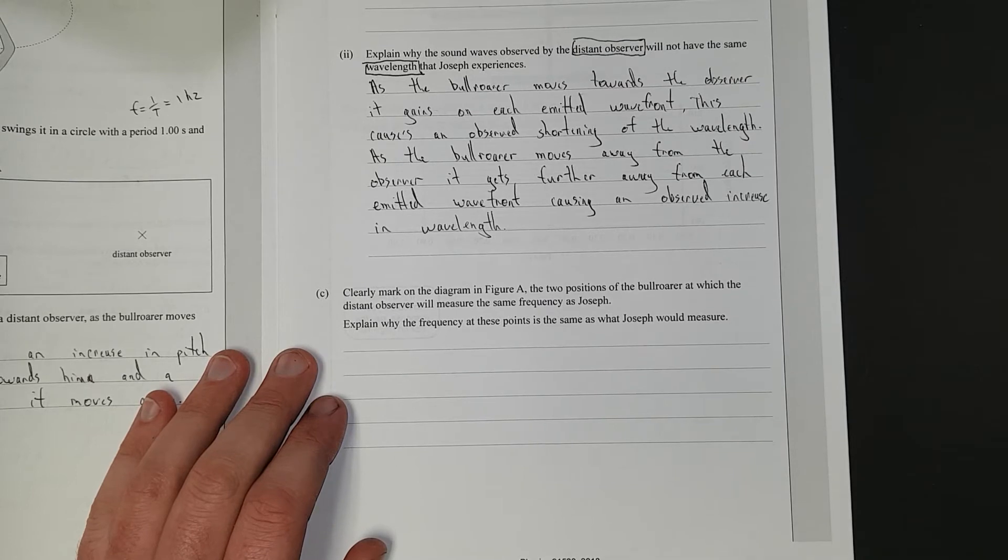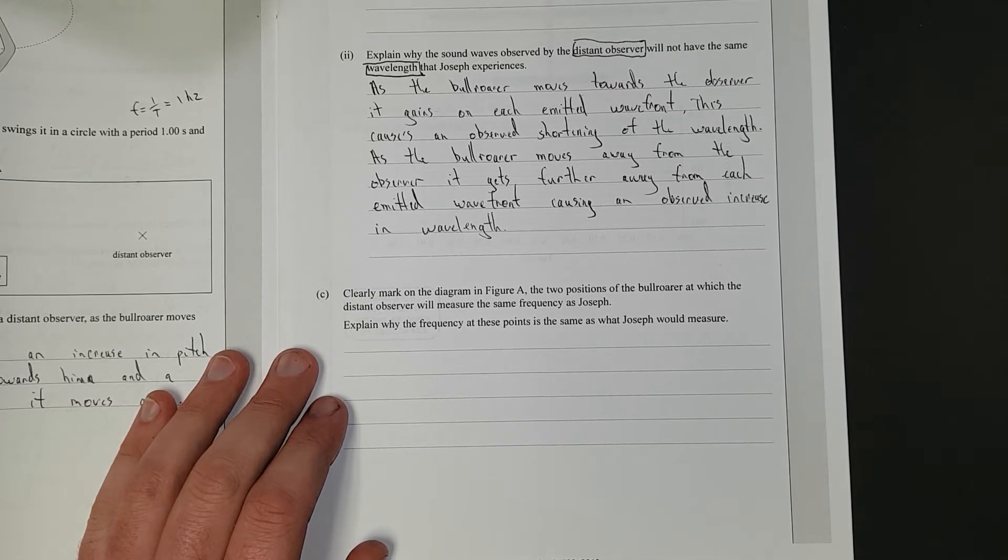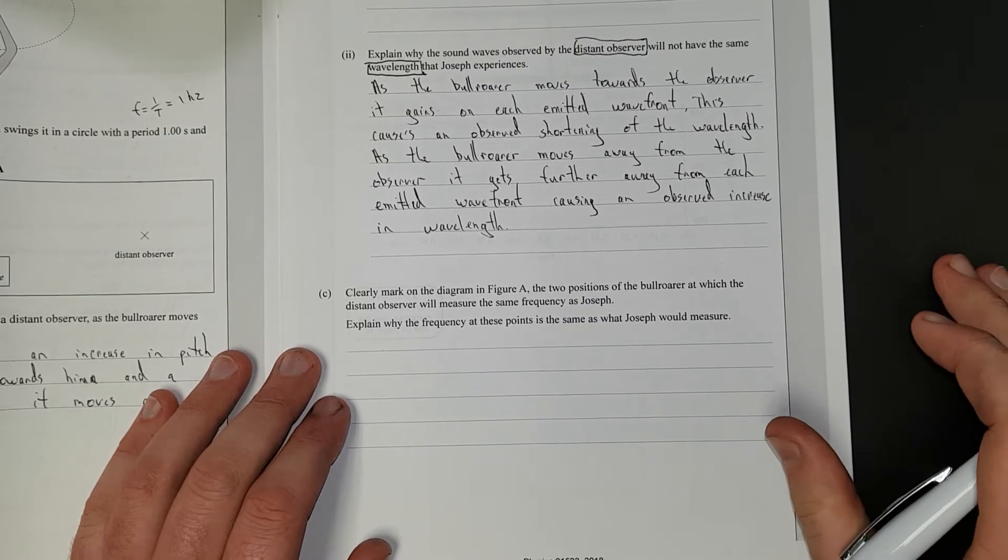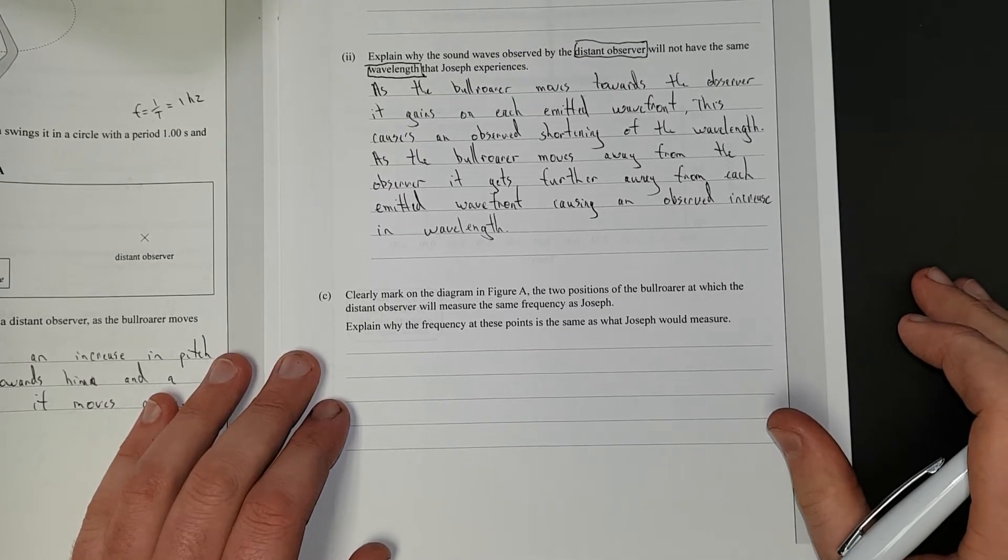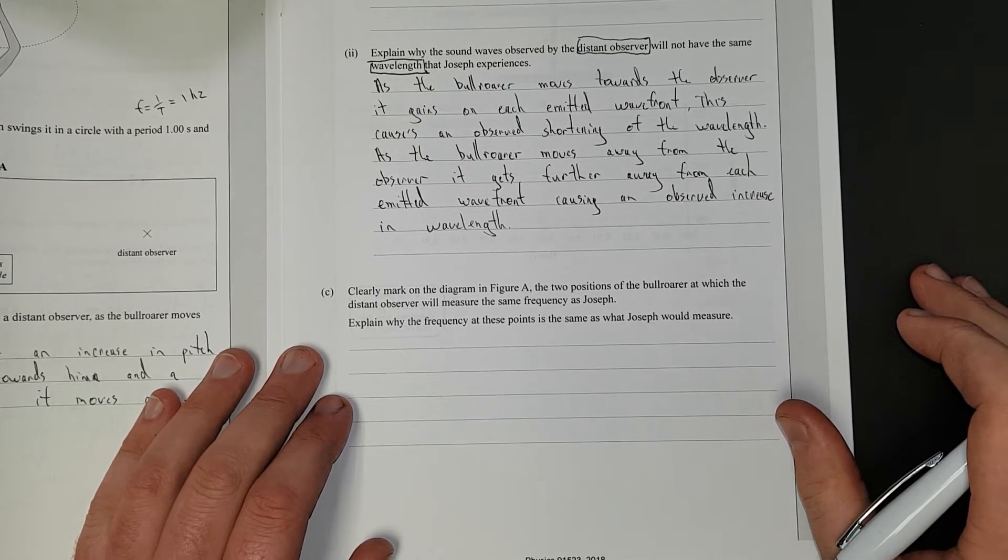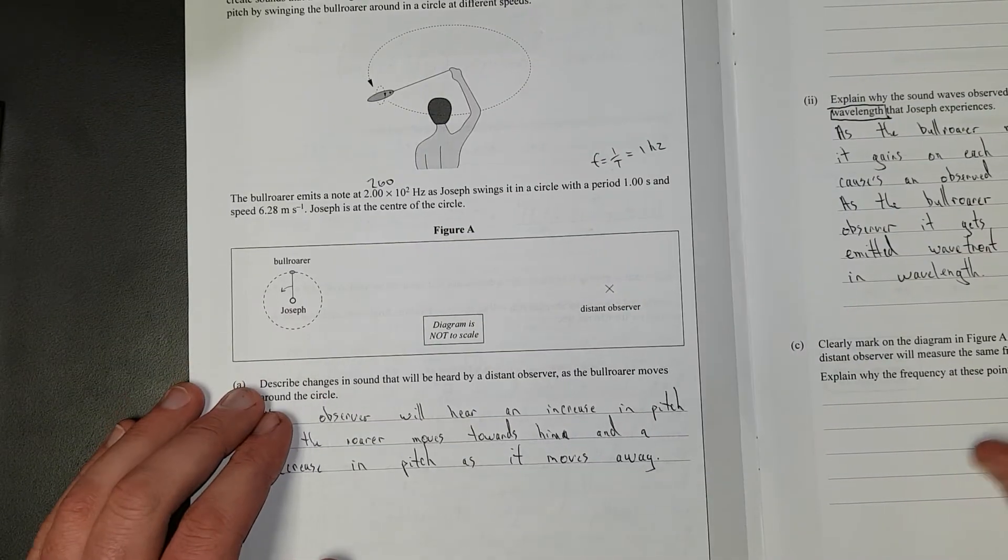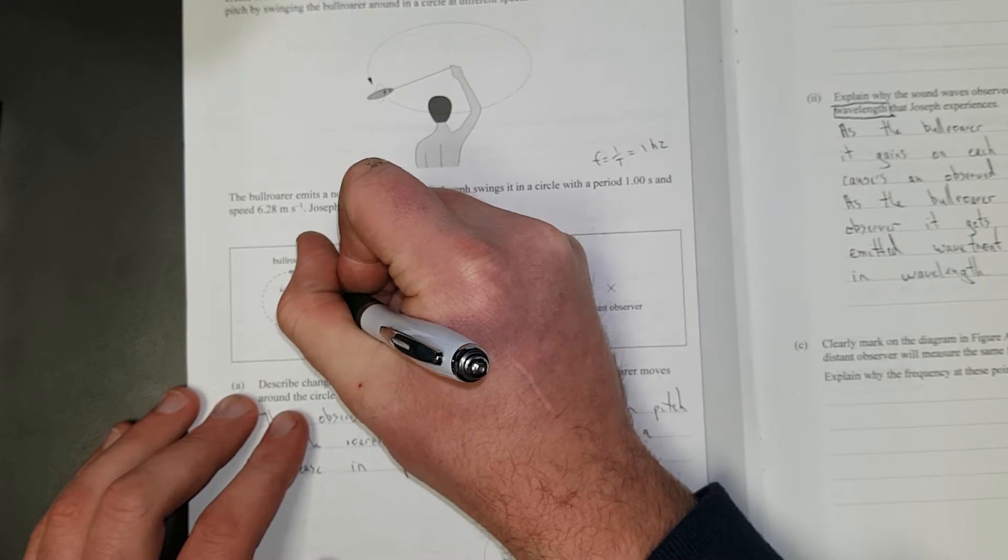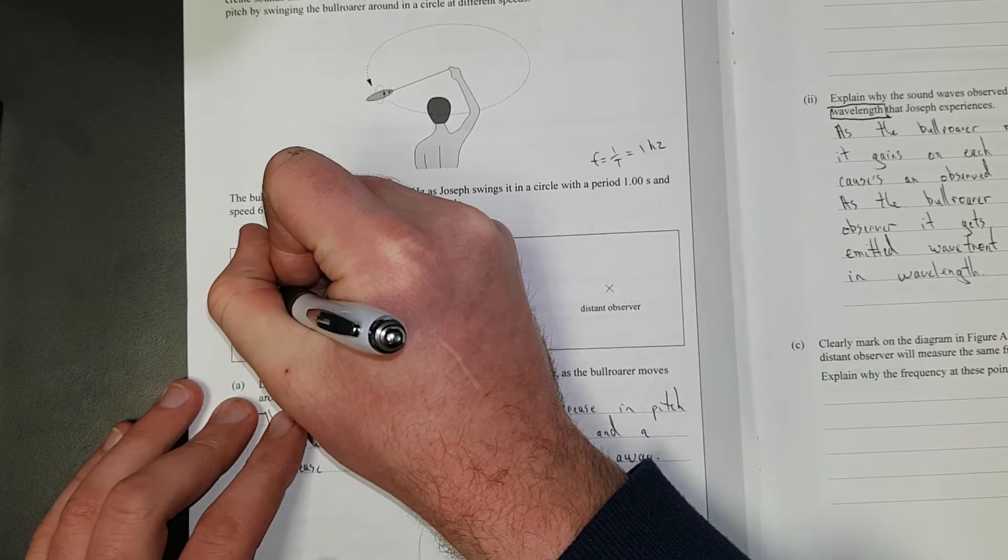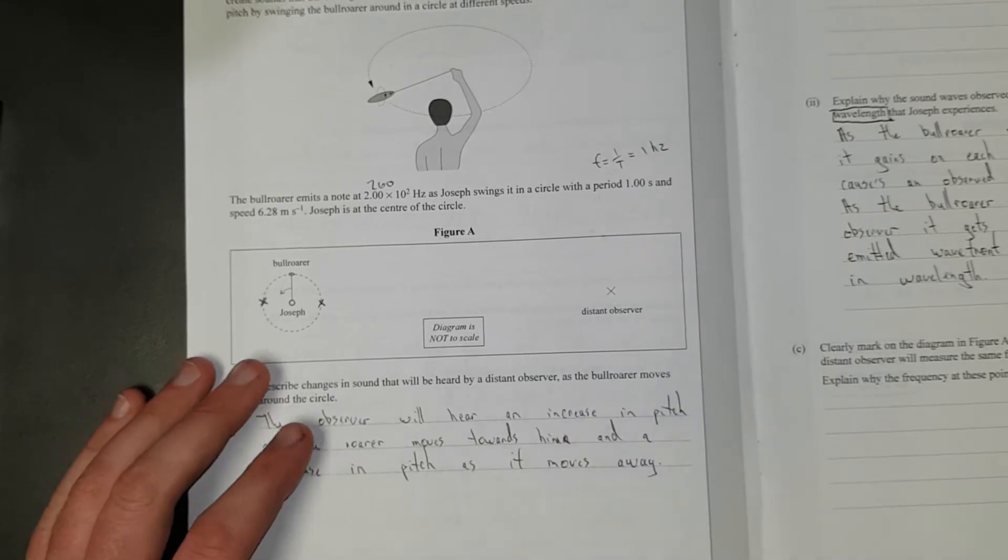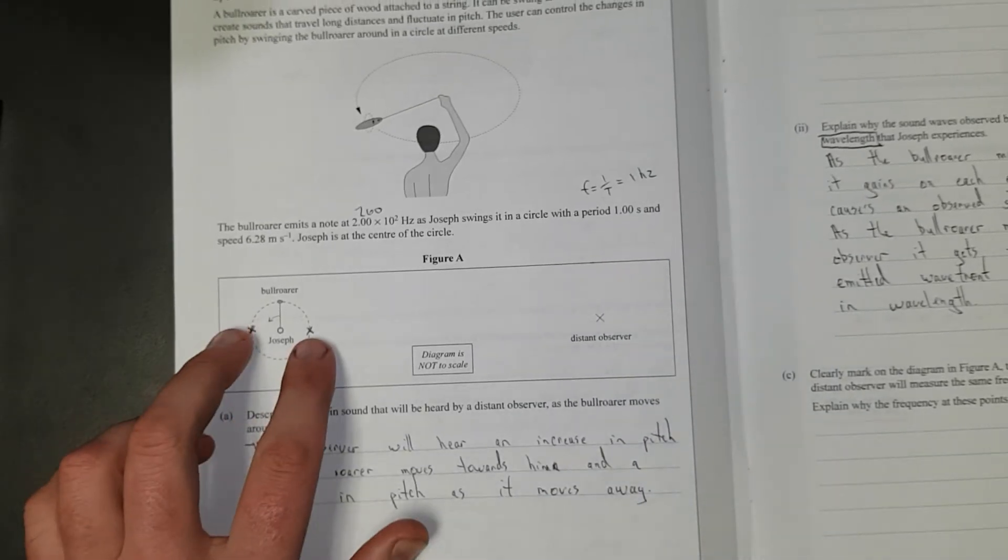Clearly mark on the diagram, figure A, two positions of the bullroarer at which the distant observer will measure the same frequency as Joseph. Explain why the frequency at these points is the same as what Joseph would measure. Easy peasy, lemon squeezy, here and here. That was an easy achieved. You got achieved, you got that.